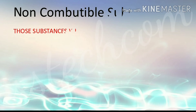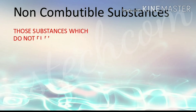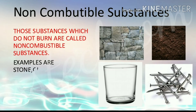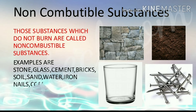Non-combustible Substances: Those substances which do not burn are called non-combustible substances. Examples are stone, glass, cement, bricks, soil, sand, water, iron, nails, copper, asbestos, etc.